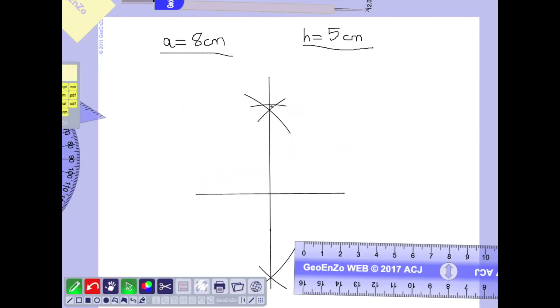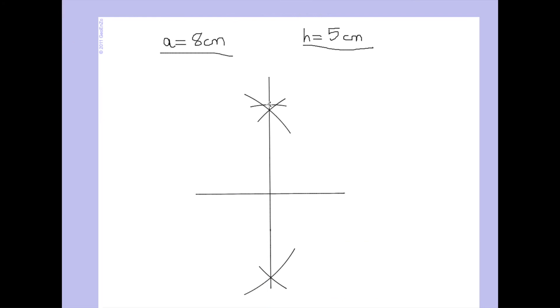The intersection between the arc we make with the bow compass and the perpendicular segment bisector is the third vertex.